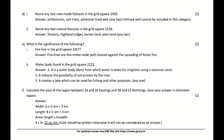Calculate the area of the region between 16 and 19 eastings and 18 and 22 northings. Answer: 12 square kilometers. The unit must be written, otherwise it will not be considered as an answer.